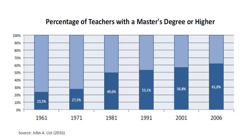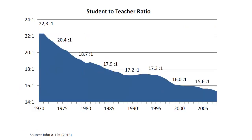This image shows the percentage of teachers with a master's degree or higher over time. In 1961, about 23.5% of teachers had a graduate diploma. By 2006, this statistic was almost 62%. The level of education of teachers in public schools clearly increased. Student-teacher ratio also dropped over that same period. In the 1970s, the average number of students per teacher was around 22. By 2005, that number was around 15.5 students per teacher.